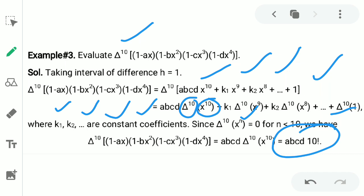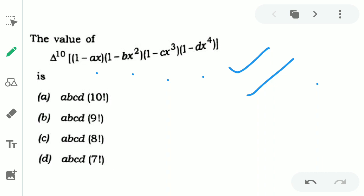It may be considered to be a very simplest problem in engineering services examination. So the right option will be option a, abcd into 10 factorial.